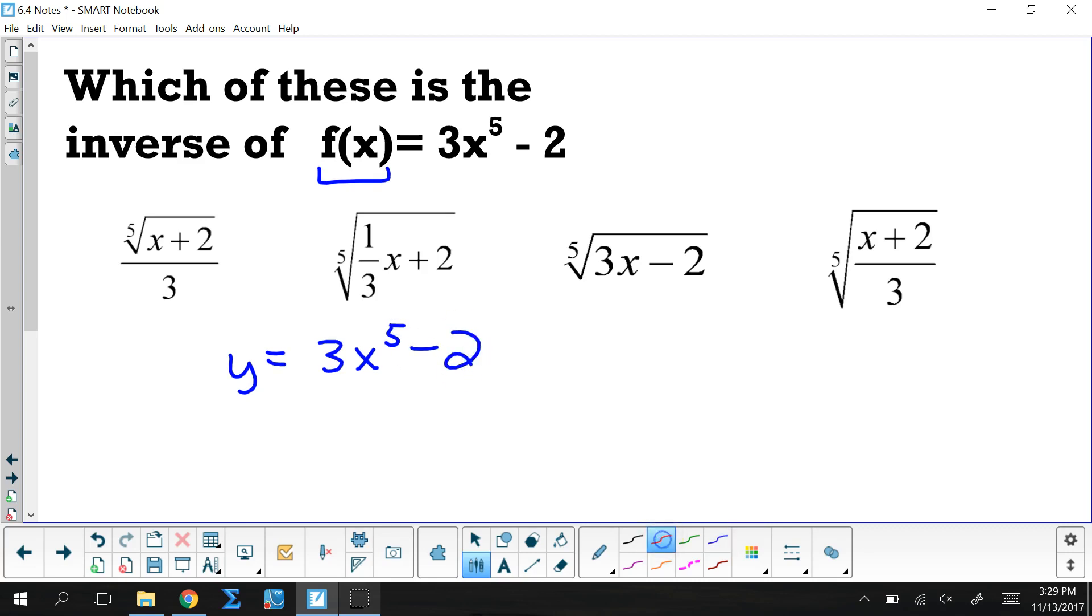Then, I'm going to switch my x and y. So, that becomes x equals 3y to the fifth minus 2. I am just switching the x and the y. Everything else stays in the same spot. Just those two variables switch out.